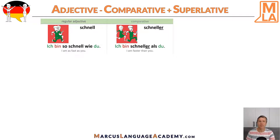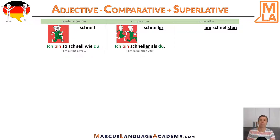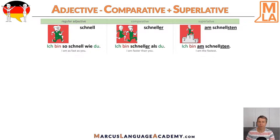And simply -er is added. Now let's take a look at the superlative. The superlative is 'am schnellsten' — the fastest. Before the adjective we have the little word 'am', and the ending is -sten. Here is an example as well: 'Ich bin am schnellsten' — I am the fastest.